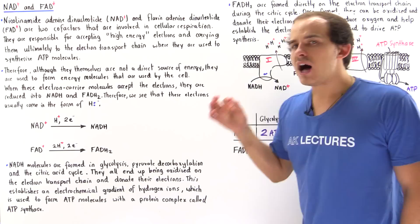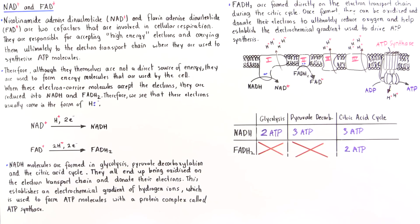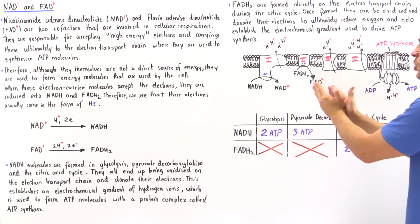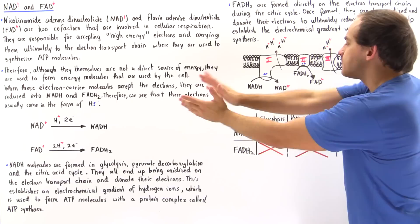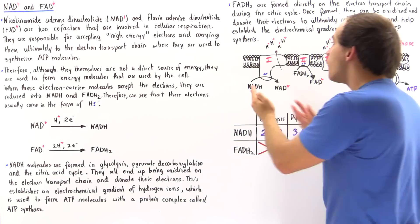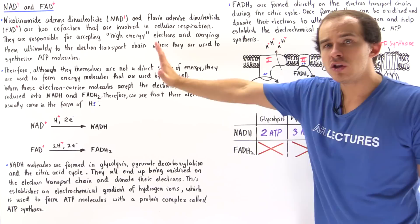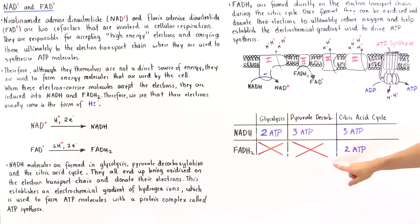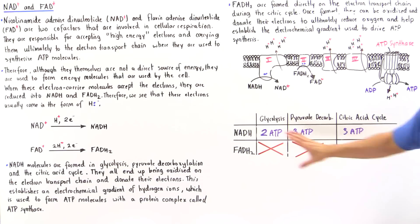Unlike NADH, FADH2 only produces two ATP per molecule. This is because FADH2 enters at protein complex 2, whereas NADH begins at protein complex 1. Since NADH starts earlier in the chain, it pumps four more protons than FADH2. Therefore, for a single FADH2 from the citric acid cycle, only two ATP molecules are produced, compared to three ATP per NADH formed within the mitochondrial matrix.